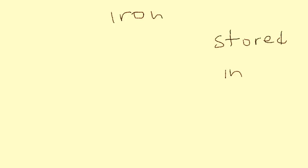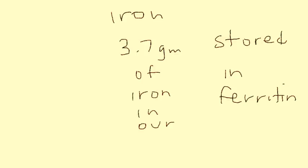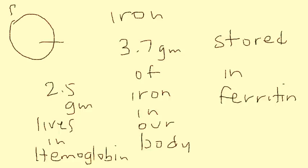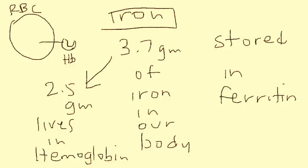Now let's talk about where iron lives in the body. It's stored mostly in ferritin, but in our entire body we have approximately 3.5 grams of iron, and a significant amount — 2.5 grams — lives in hemoglobin. Hemoglobin is a molecule that sits inside the red blood cell, and the rest of the iron is mostly found stored inside ferritin.